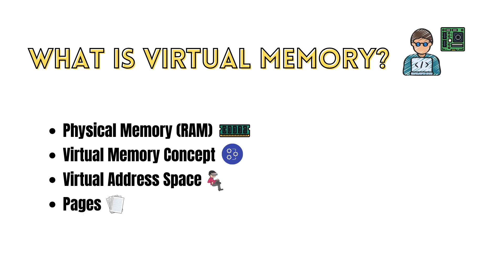Both physical RAM and disk space are divided into fixed-size blocks called pages. The operating system manages these pages, keeping track of which ones are in RAM and which ones have been temporarily moved to disk.